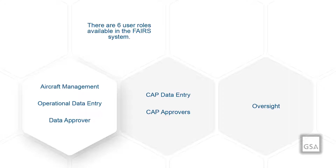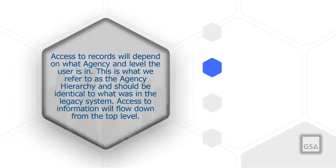The fourth is CAP Data Entry, responsible for creating the business case summaries for their agency. The fifth is CAP Approvers, responsible for approving the business case summaries. The sixth are Oversight Users—FAIRS Program Managers and Administrators—who are allowed to see all data with exception of mission sensitive data from all agencies entered into the system. Oversight can add, modify, and approve or reject data.